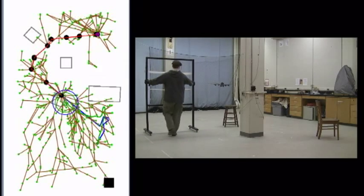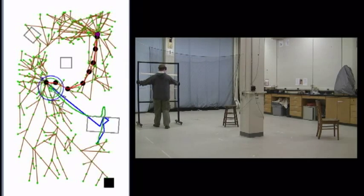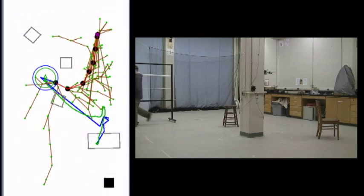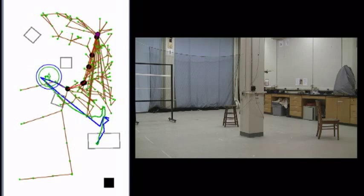This time, the obstacle is moved again, clearing a new path for the vehicle. The planner recognizes that this path is better and changes the trajectory accordingly.